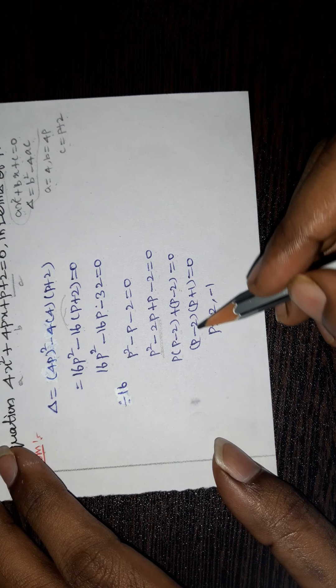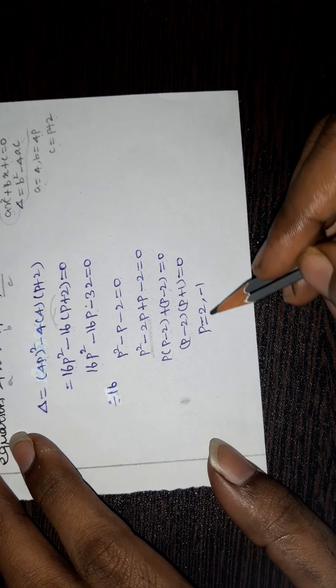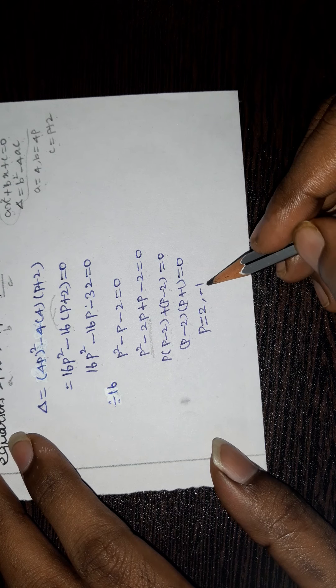So (p - 2) and (p + 1) are the two factors. The p values are 2 and -1.